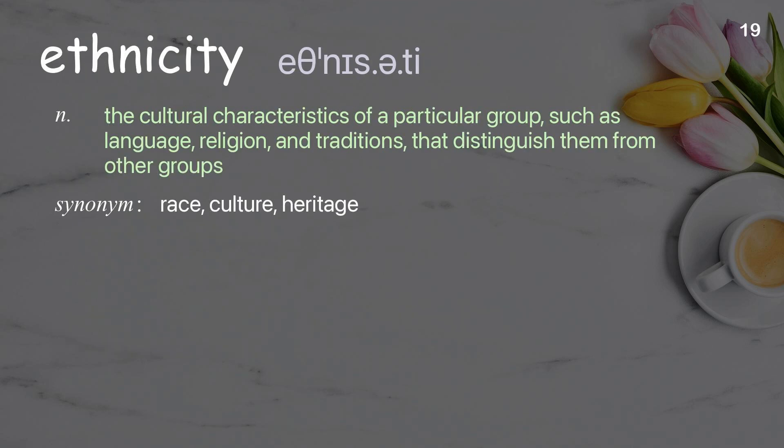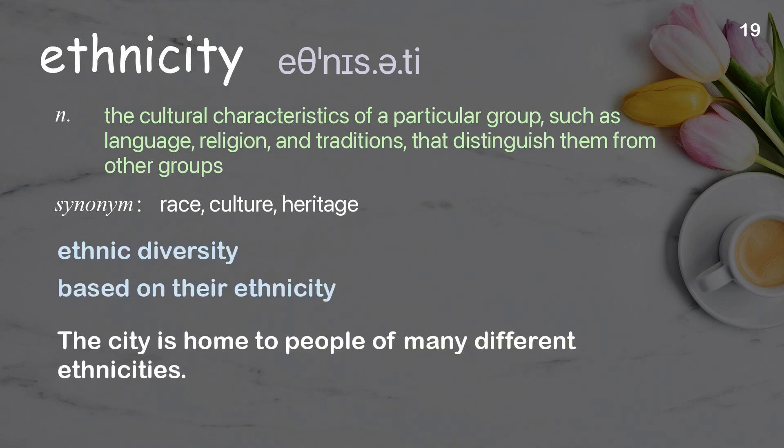Ethnicity: The cultural characteristics of a particular group, such as language, religion, and traditions, that distinguish them from other groups. Examples: Ethnic diversity. Based on their ethnicity. The city is home to people of many different ethnicities.